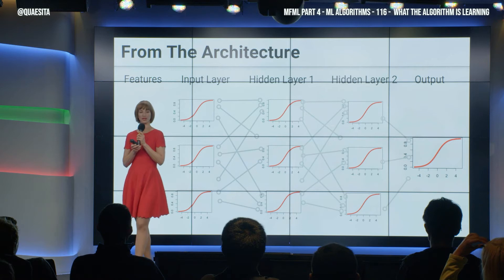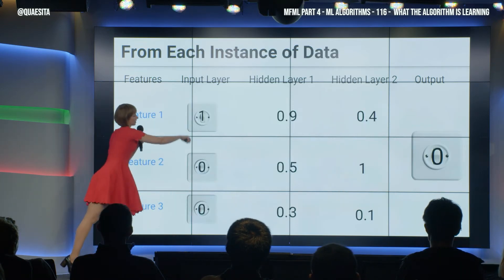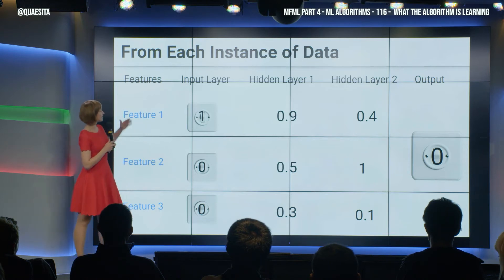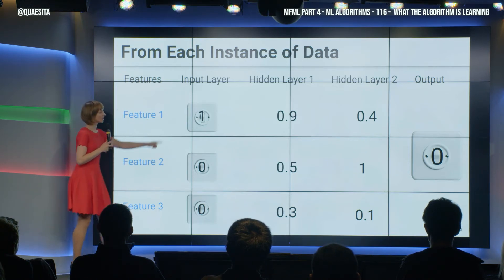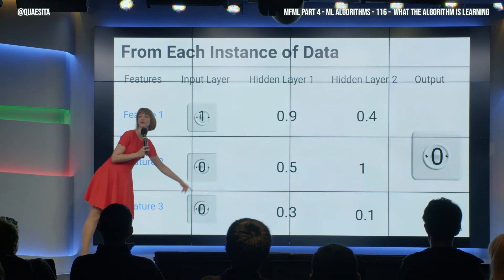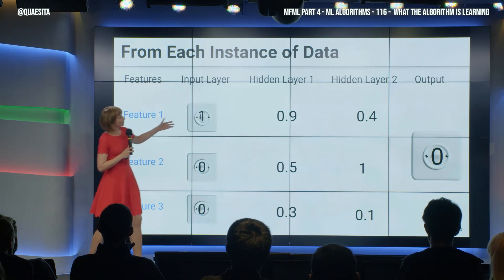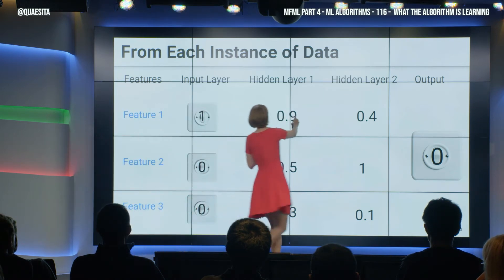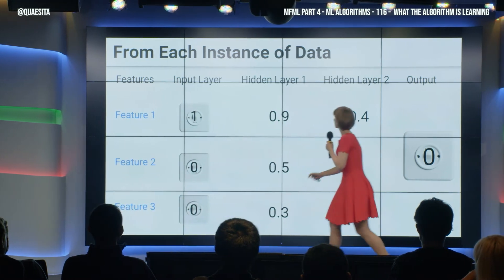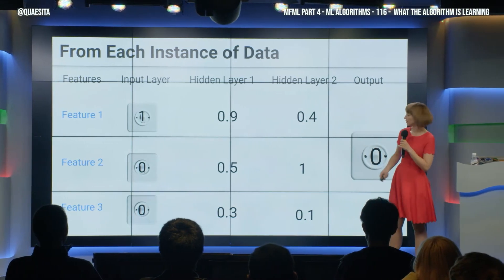So that's all there before you begin. From each data point, you get the actual values. So if this is a row in your spreadsheet, these are the column headings, and the first row has one, zero, and zero in it. And then as this flows through your network, the values inside the hidden layers are also determined by that particular example.